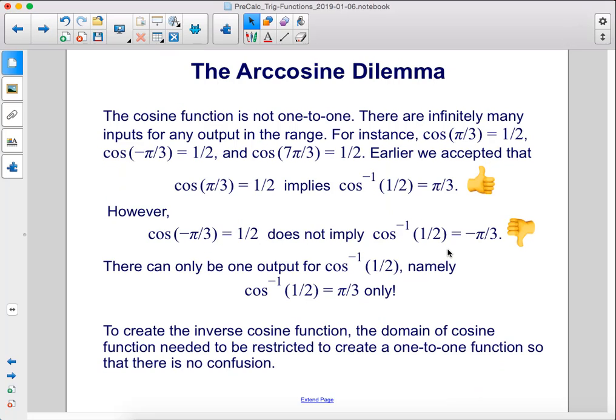The cosine function is not 1 to 1. There are infinitely many inputs for any output in the range. For instance, cosine of π/3 equals 1/2, cosine of negative π/3 equals 1/2, and cosine of 7π/3 equals 1/2. Earlier we accepted that cosine of π/3 equals 1/2 implies that arc cosine of 1/2 equals π/3.